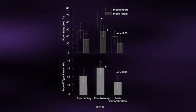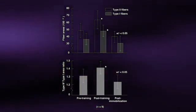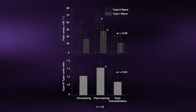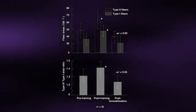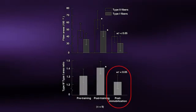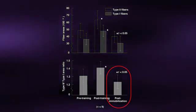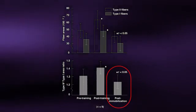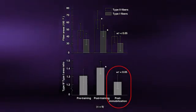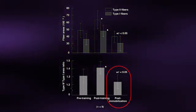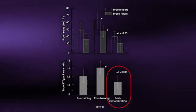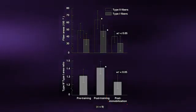Finally, notice that the principle of reversibility applies to strength training as well. The 'use it or lose it' concept is clearly evident when the trained limb is immobilized for a period of time. Without the training stimulus, the muscle begins to atrophy, as indicated by the significant decrease in fiber mass and area in both type 1 and type 2 muscle fibers.